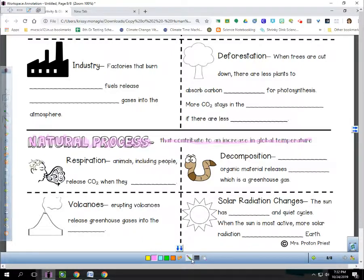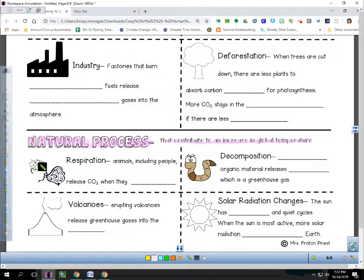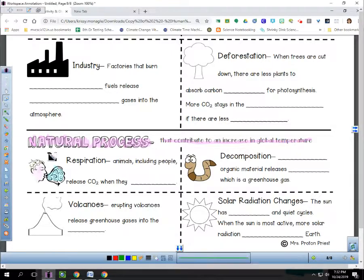The first one is respiration. Respiration is going to be one of those that contributes. Animals and people are animals, release carbon dioxide when they breathe. And the whole process of respiration is where we breathe in the air, it goes into our lungs, gets picked up by blood cells and taken out to all the cells in our body. And then it returns with that carbon dioxide that we exhale it.